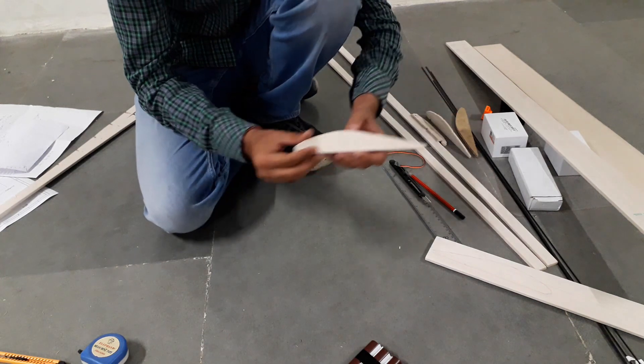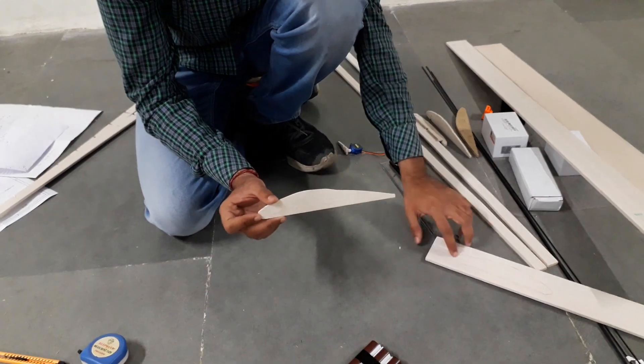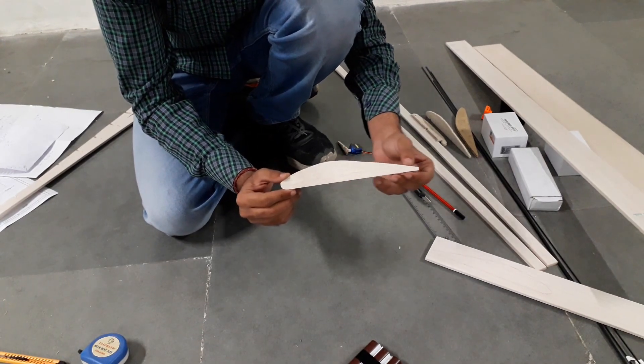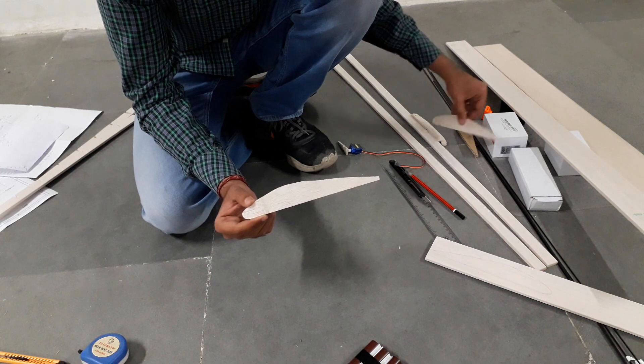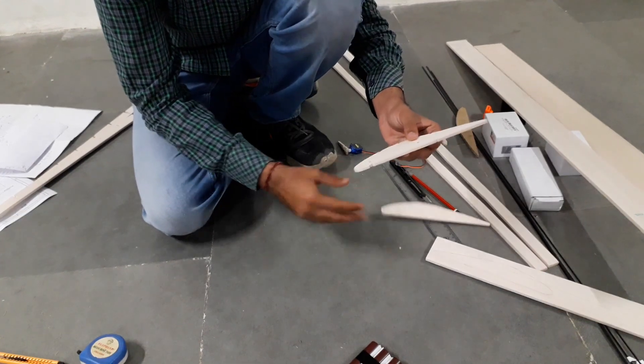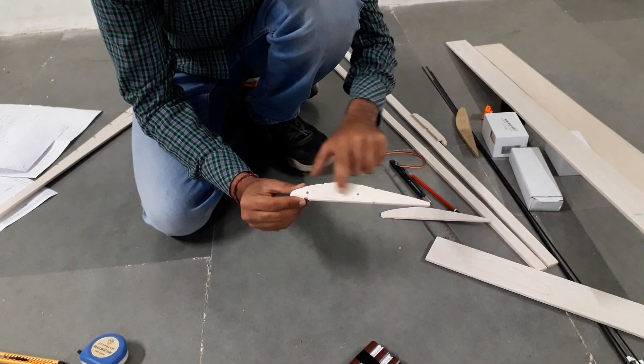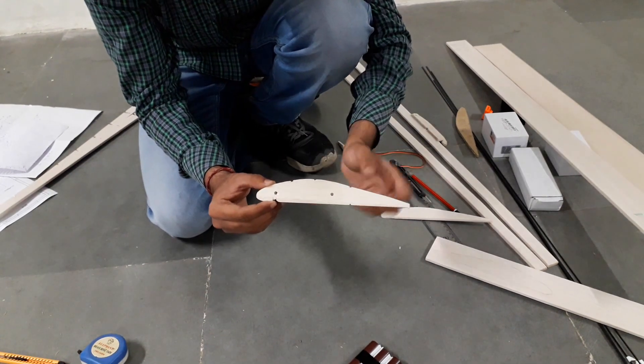You will get something like this shape from balsa. According to me and our needs, we need to cut some slots like this and a hole too.